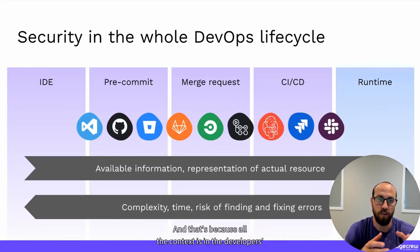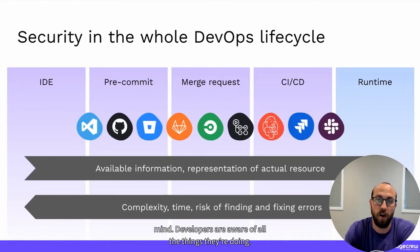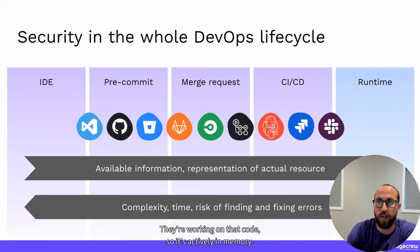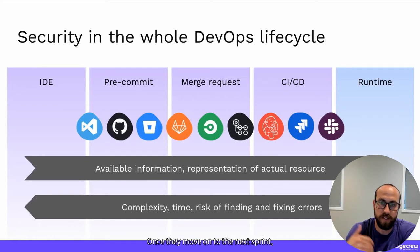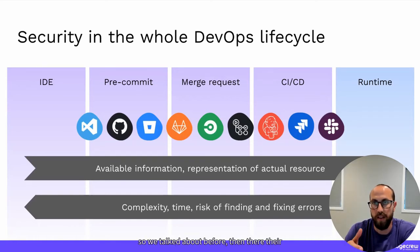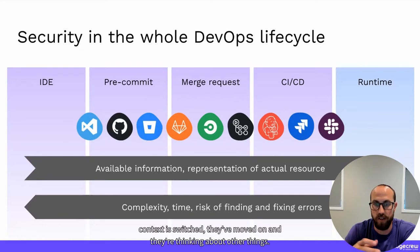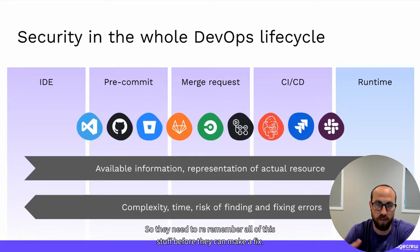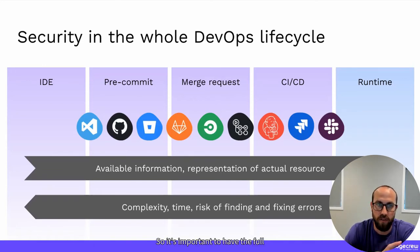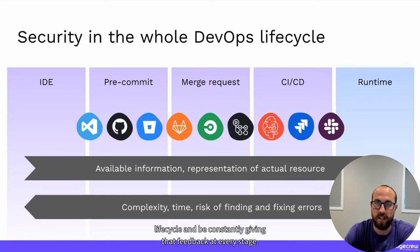That's because all the context is in the developer's mind — they're aware of all the things they're doing, working on that code, so it's actively in memory. Once they move on to the next sprint, their context has switched and they need to re-remember everything before they can make a fix. So it's important to give feedback at every stage of the full lifecycle.